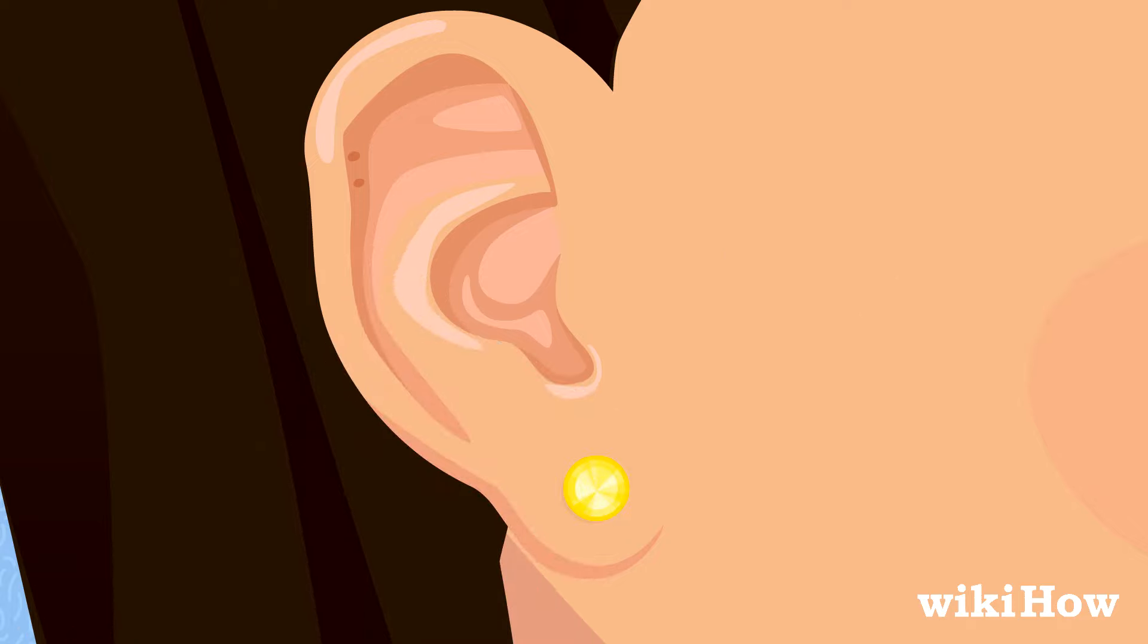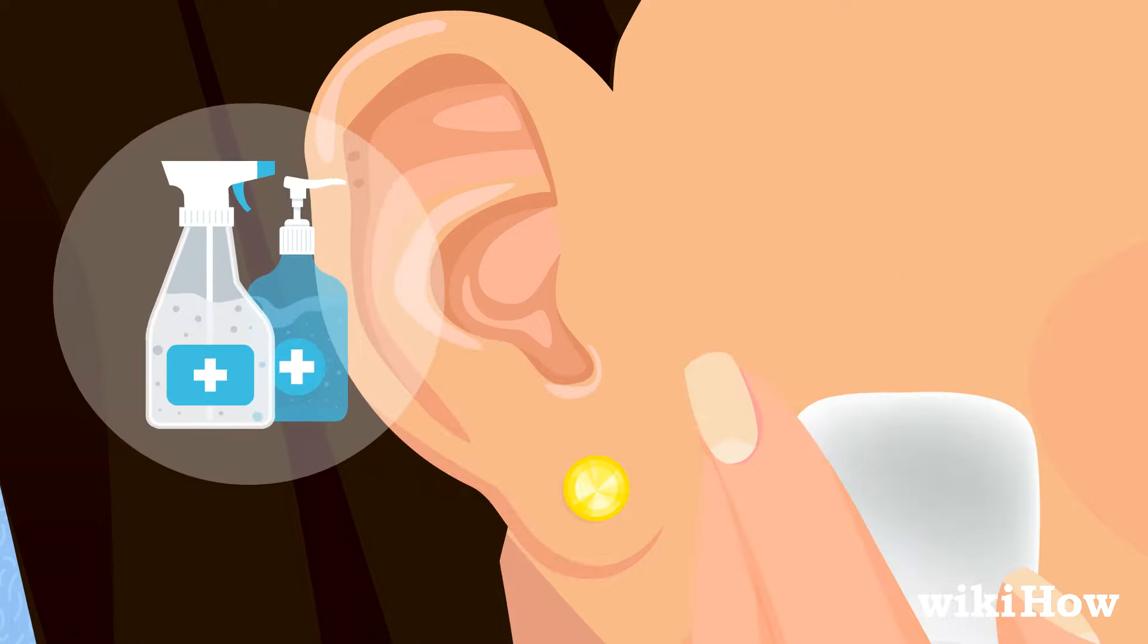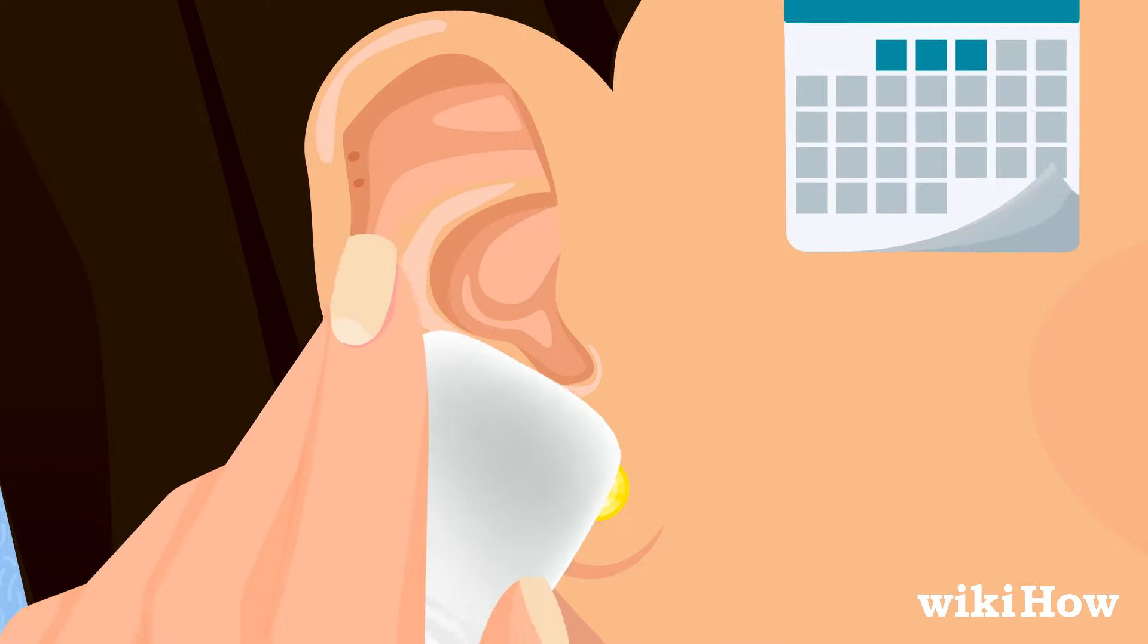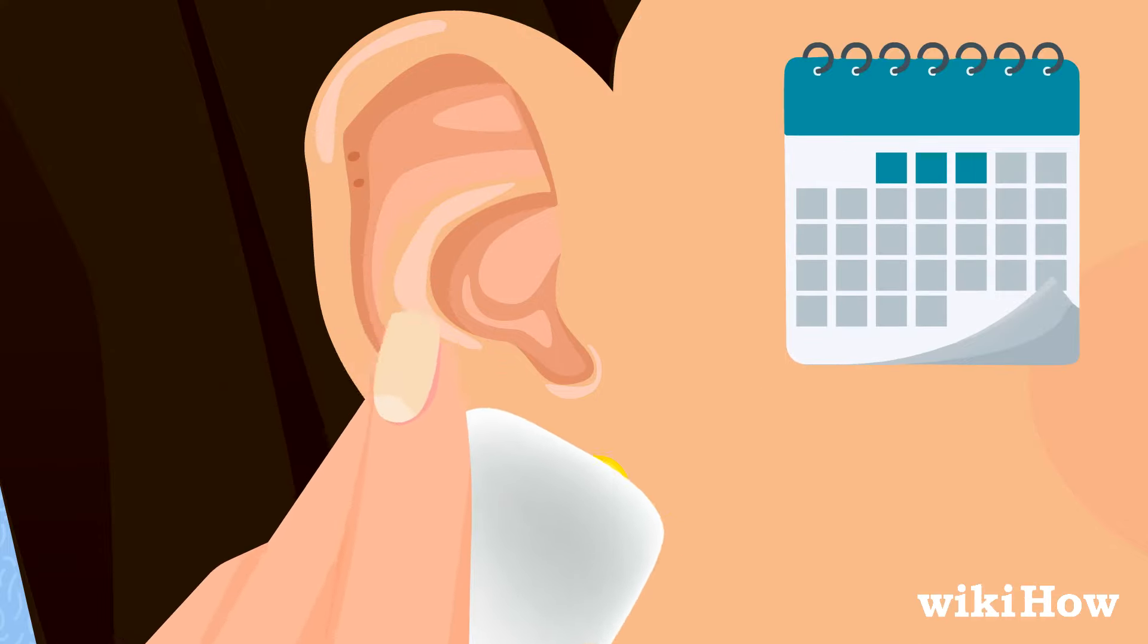Some piercers recommend wiping the piercings with rubbing alcohol or antibiotic ointment twice a day for the first two to three days after you get your ears pierced.